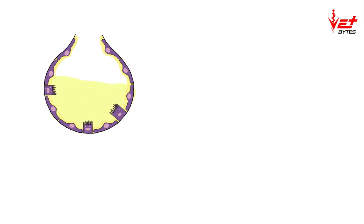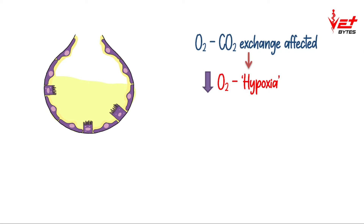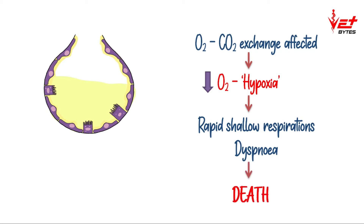Once the alveoli are filled with exudates, the oxygen-carbon dioxide exchange will be affected. There will be decreased oxygen in the blood and tissues, referred to as hypoxia. When oxygen is very low, the respiratory rate increases, resulting in rapid shallow respirations. There may also be difficulty in breathing, referred to as dyspnea. Ultimately, it can lead to death of the animal.